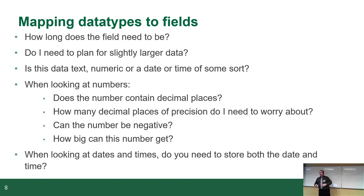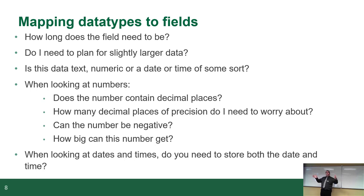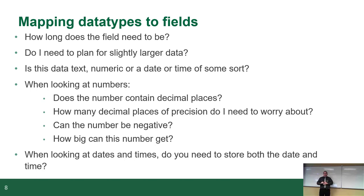Is the data text, numeric, date, or time of some sort? Figure out what kind of data is going in and use the appropriate data type. Numbers stored in a number field — decimal, integer, or float — take up less space than characters, and for large databases with millions of rows those extra bits add up. It's also faster to search on numbers when they're stored as numbers than searching on a number stored as a string, because you'd have to do conversions.